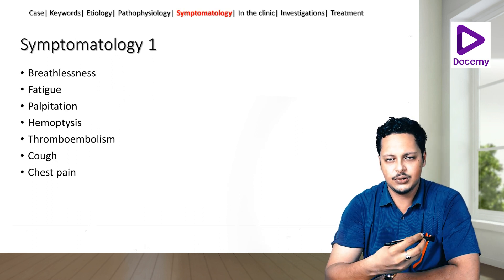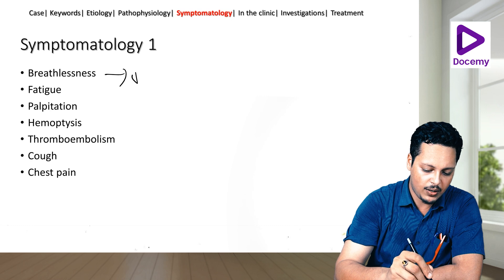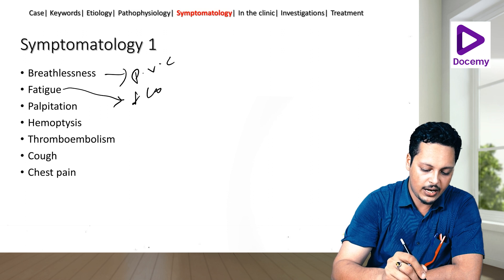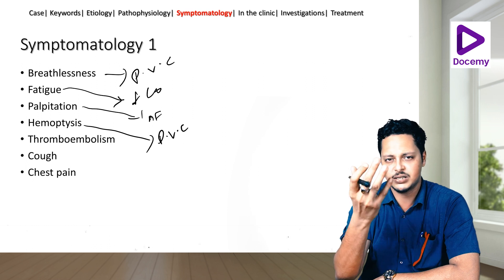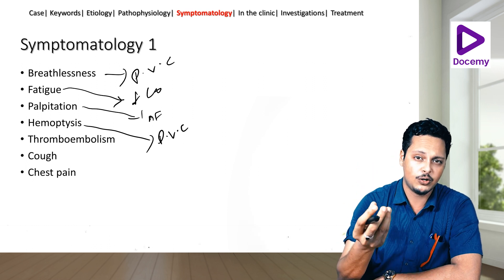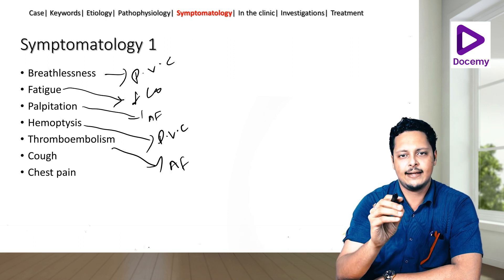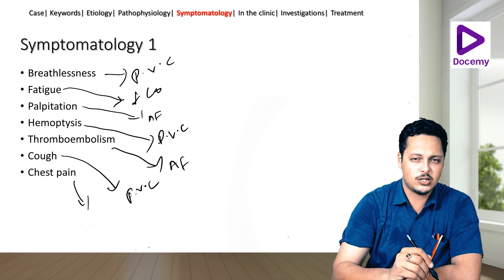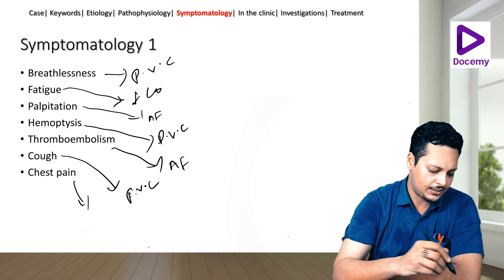Symptomatology in mitral stenosis: breathlessness due to pulmonary venous congestion; fatigue due to decreased cardiac output; palpitations due to atrial fibrillation; hemoptysis due to pulmonary venous congestion bursting small vessels; thromboembolism due to AF triggering LA thrombus formation; cough due to pulmonary venous congestion; and chest pain, which is non-specific but attributable to pulmonary venous congestion, palpitations, or pulmonary arterial hypertension.